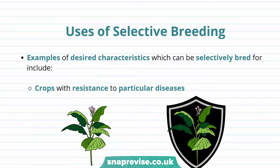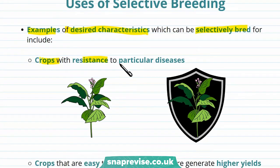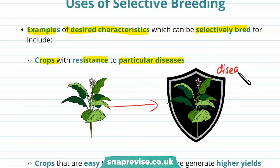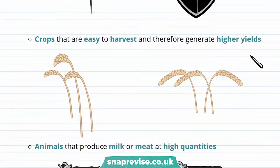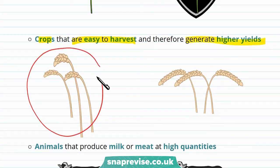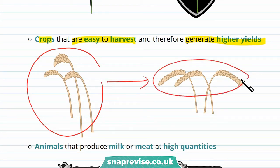Now let's talk about some of the uses of selective breeding. Examples of desired characteristics include crops with resistance to particular diseases — by breeding crops over many generations which are disease resistant, the offspring will be disease resistant as well. You can also breed crops that are easy to harvest and generate higher yields. For example, wheat can be made a uniform size to make harvesting easier.